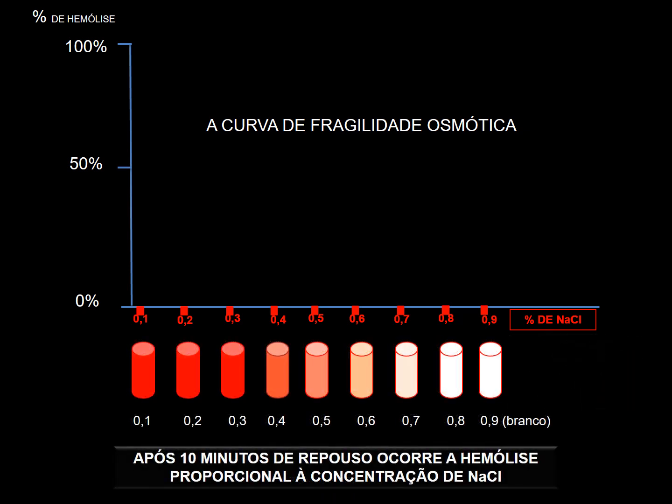Quando retirar os tubos após 10 minutos, terá algo semelhante a isso: no tubo 01 houve hemólise quase total, o líquido ficou bem vermelho; o 02 igualmente muito vermelho; o 03 vermelho, mas nem tanto; o 04 com cor vermelha mais fraca; o 05 discretamente vermelho; e no 06, 07, 08, 09 às vezes não se vê nenhuma mudança. Já no repouso você observa essa situação, então centrifuga para retirar o sobrenadante.